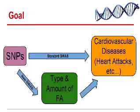Our overall goal was to look at the GWAS in a different way. There has been a lot of research attempting to find SNPs correlated with cardiovascular diseases such as heart attacks. However, in this GWAS we attempted to find SNPs correlated with the type and amount of red blood cell fatty acids. This is unique and important because these fatty acids may encode more information about specific cardiovascular diseases. As shown in the diagram, the standard GWAS goes from purple to orange, whereas we go from purple to green and then to orange.